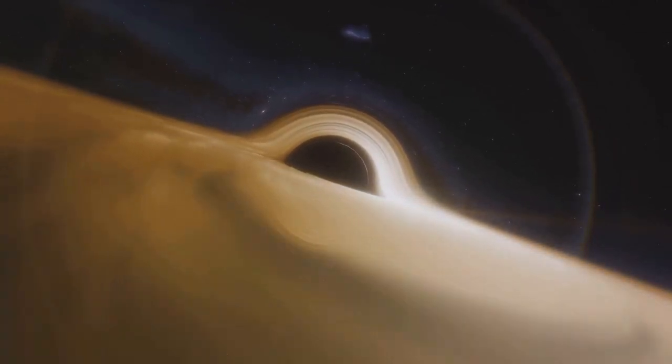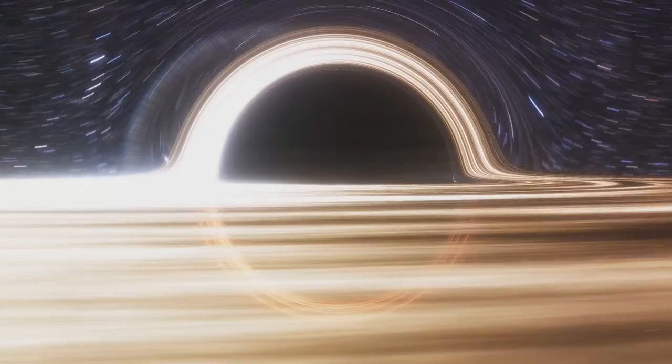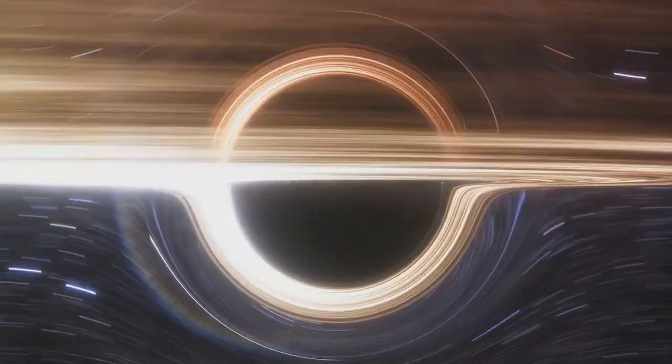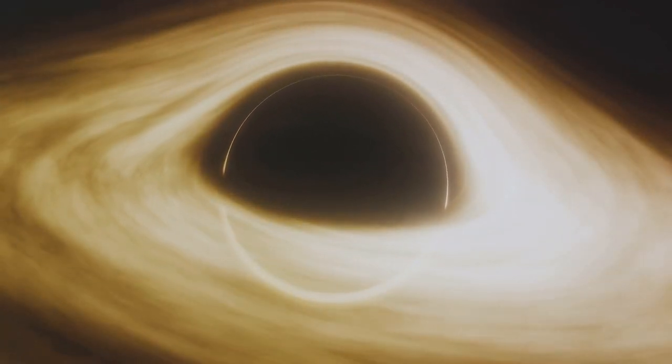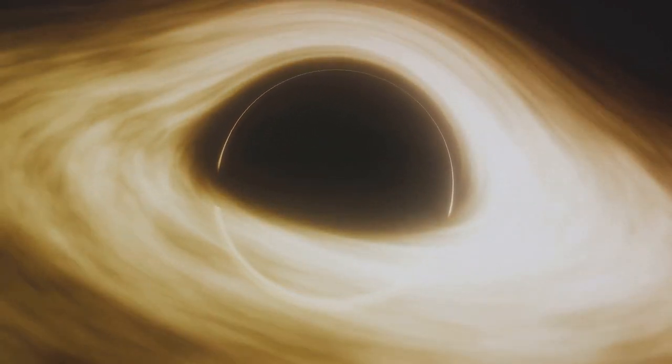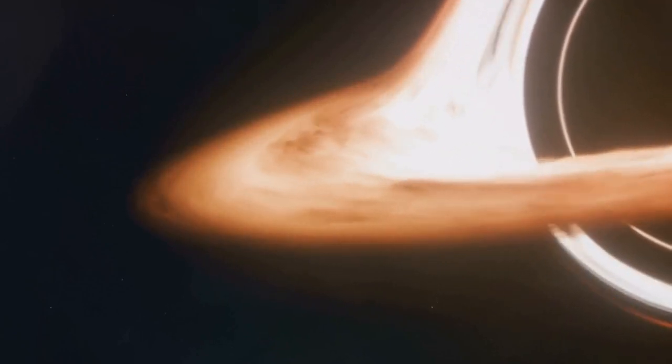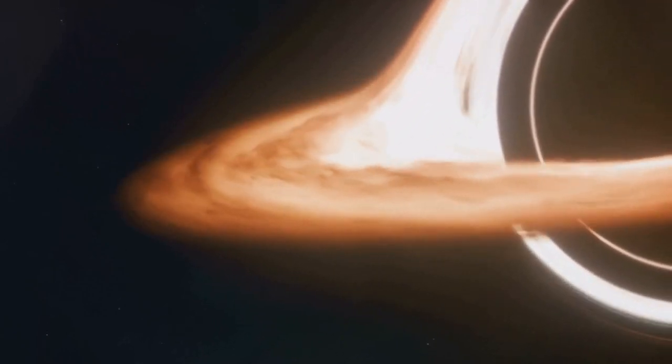Now let's consider the smaller black holes. These wouldn't necessarily consume the star outright. Instead, they would cause turbulence in the star's core, leading to changes in its surface activity. This could result in a star that behaves in ways we've never seen before. A celestial anomaly.